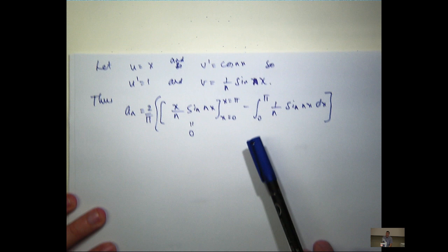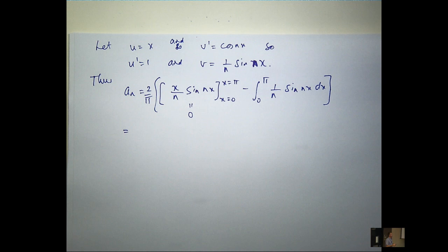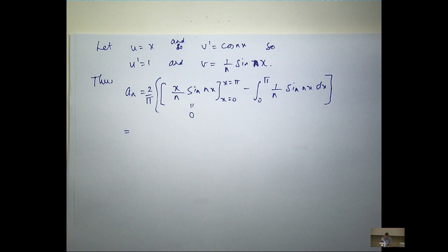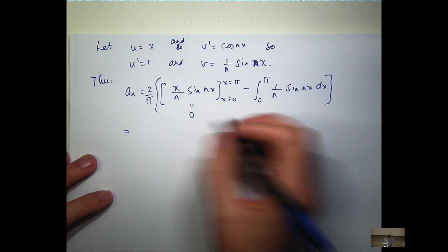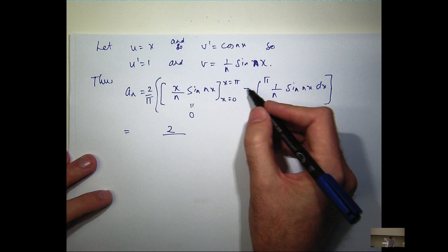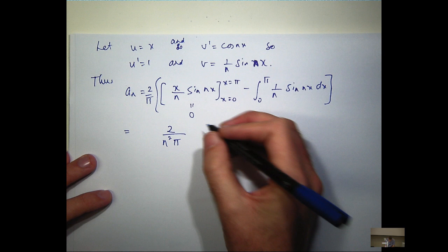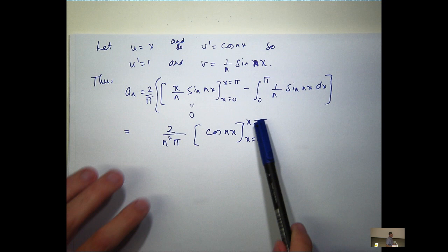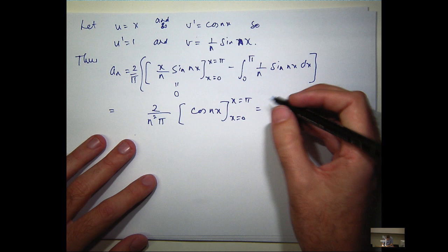When I integrate sin(nx) I get negative cos(nx)/n, adjusting by dividing by n, giving another factor of n in the denominator — so I'll get cos(nx)/n². When I substitute in, at x = 0 cosine simplifies to 1.